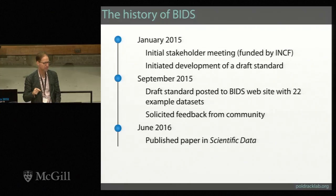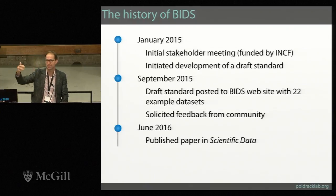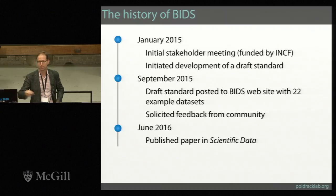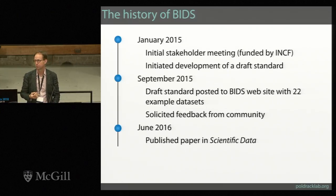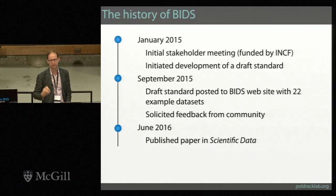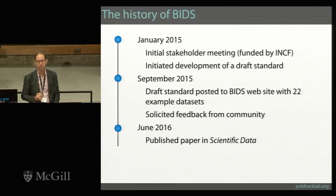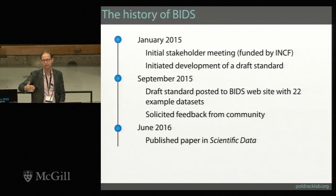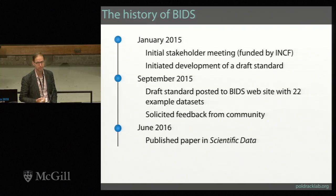In January 2015, we held an initial meeting at Stanford. A number of people were there to start laying out BIDS. This was funded by INCF and by our Center for Reproducible Neuroscience. That led to the development of a draft standard that we passed around among ourselves and then later in 2015 opened up to the community, solicited open feedback, and got a good bit of it. In 2016 we published the first official version of the standard and also published a paper in Scientific Data.